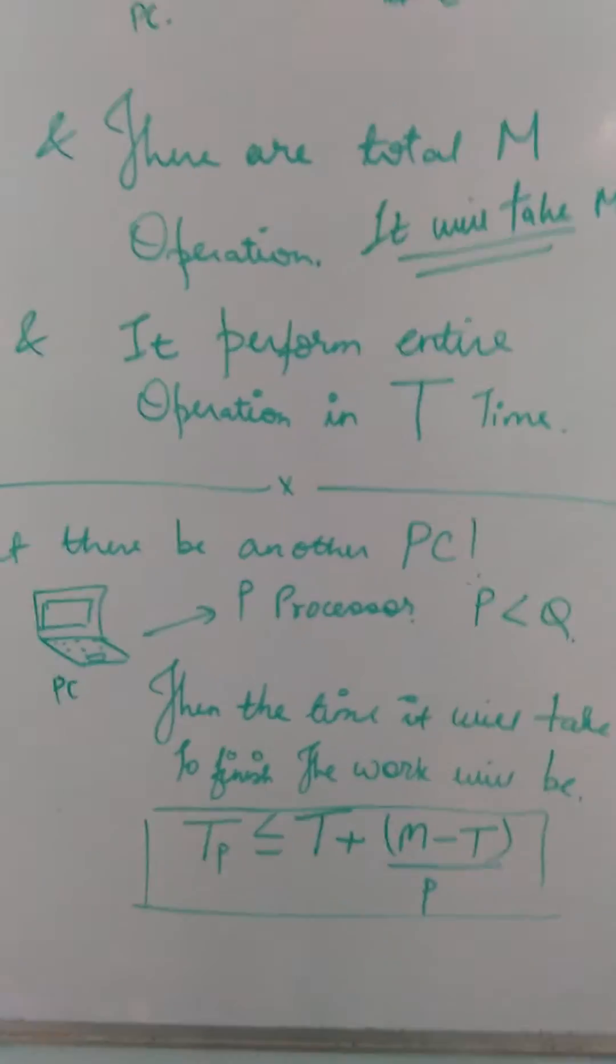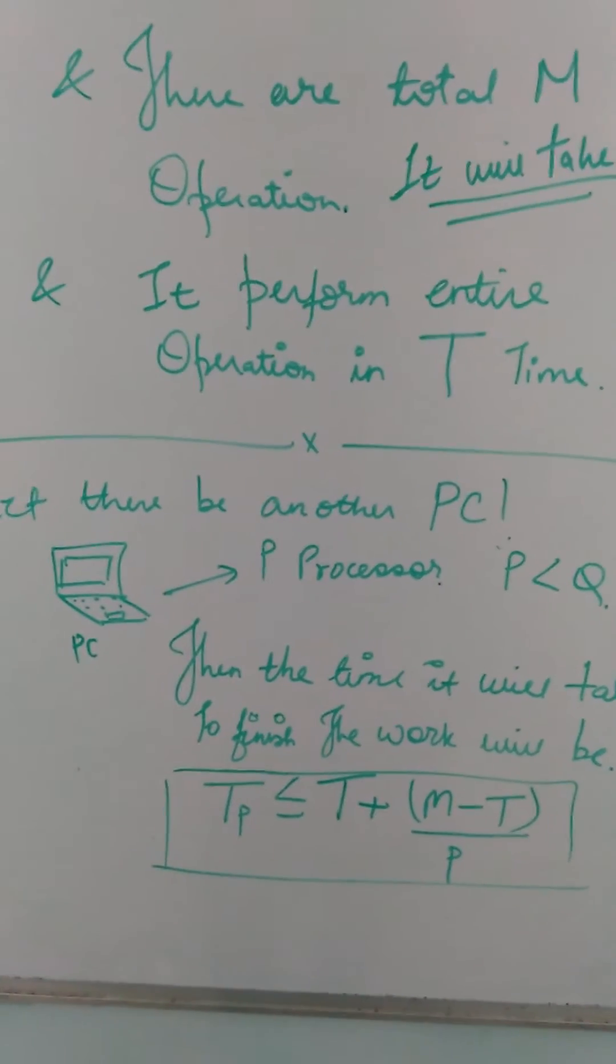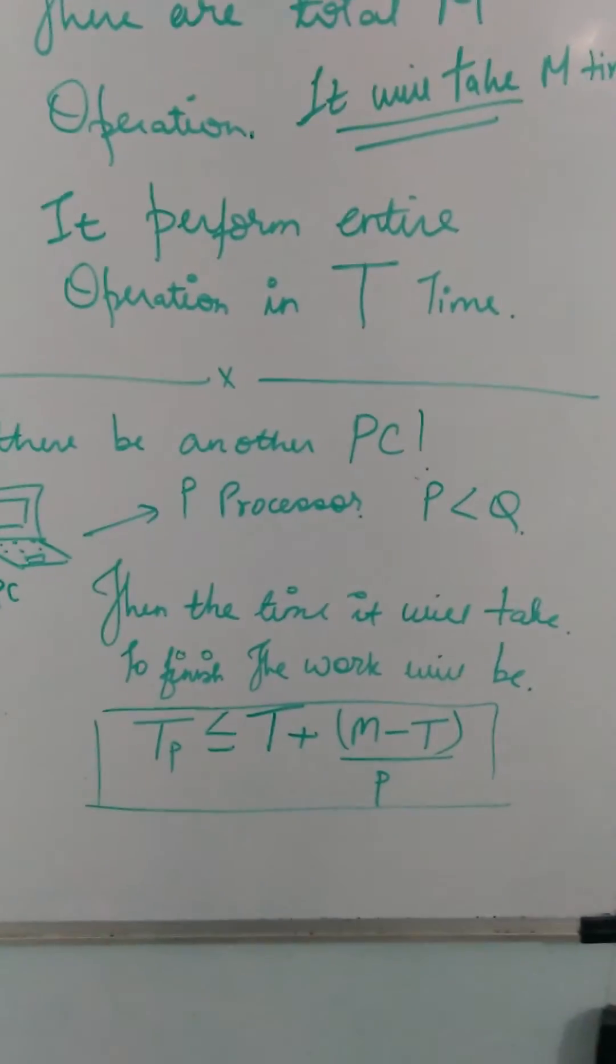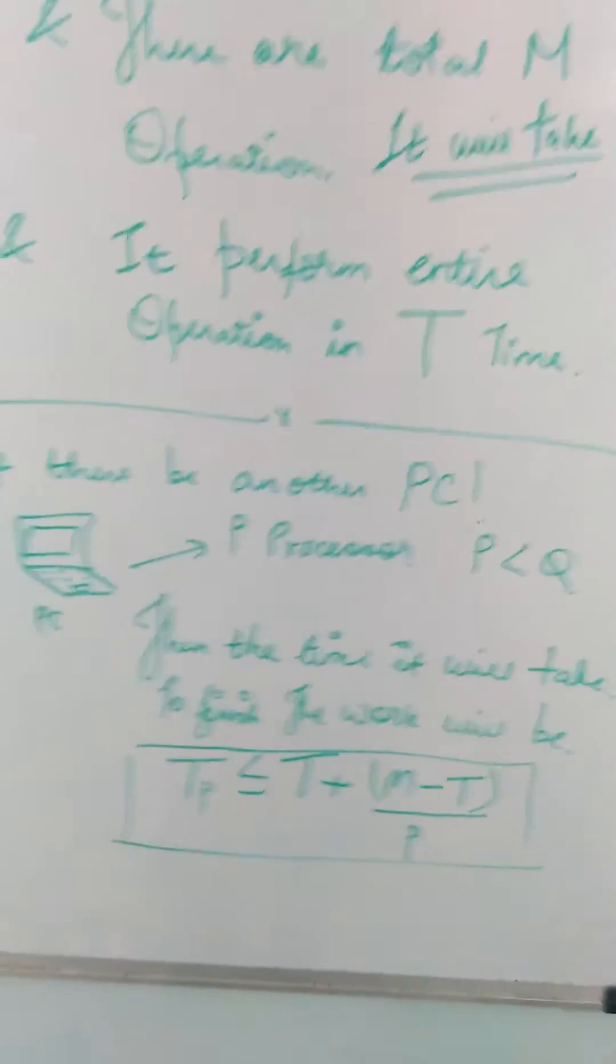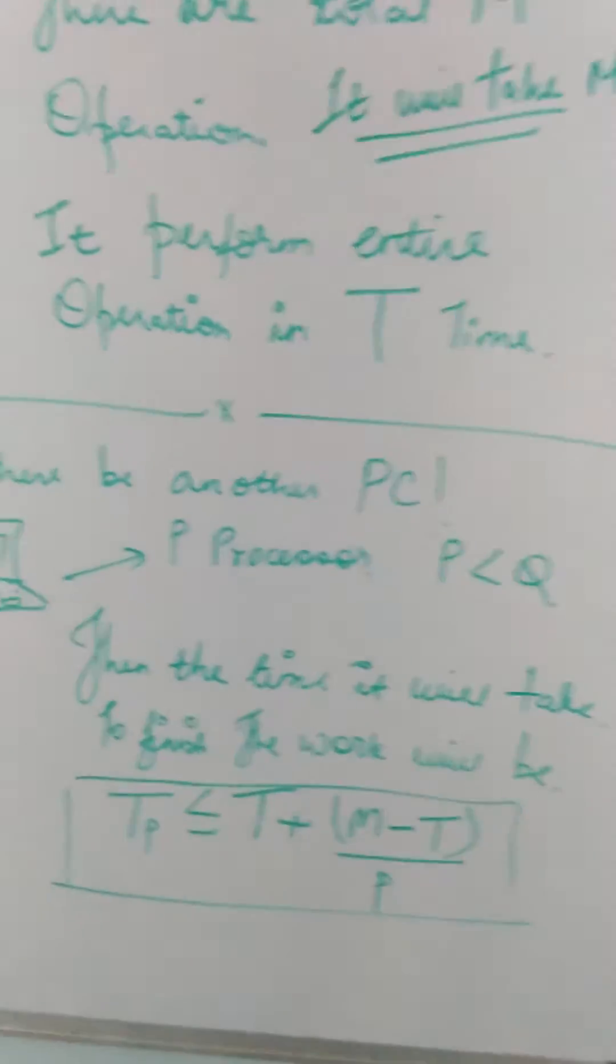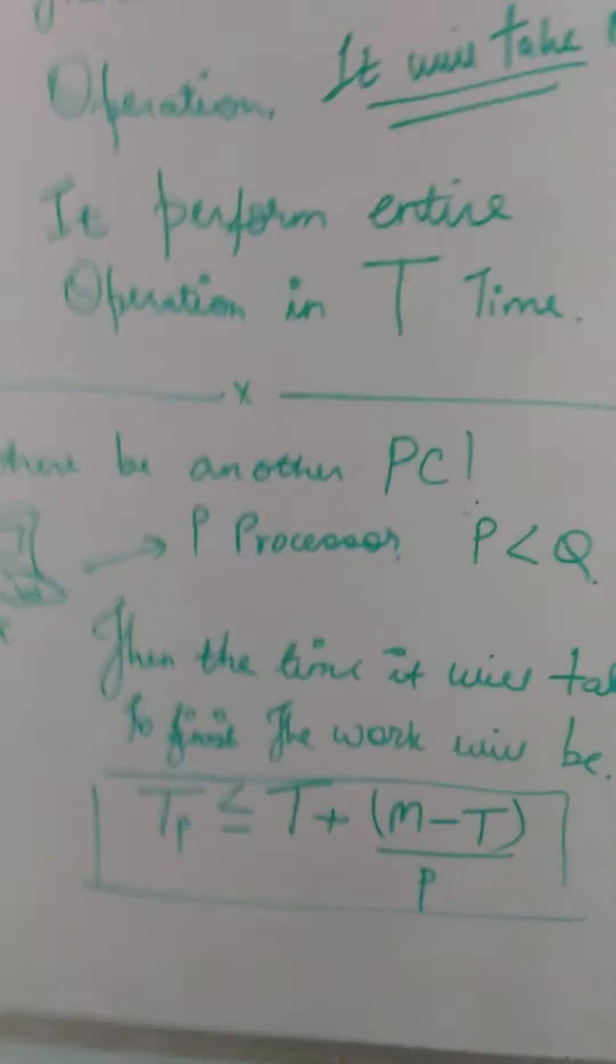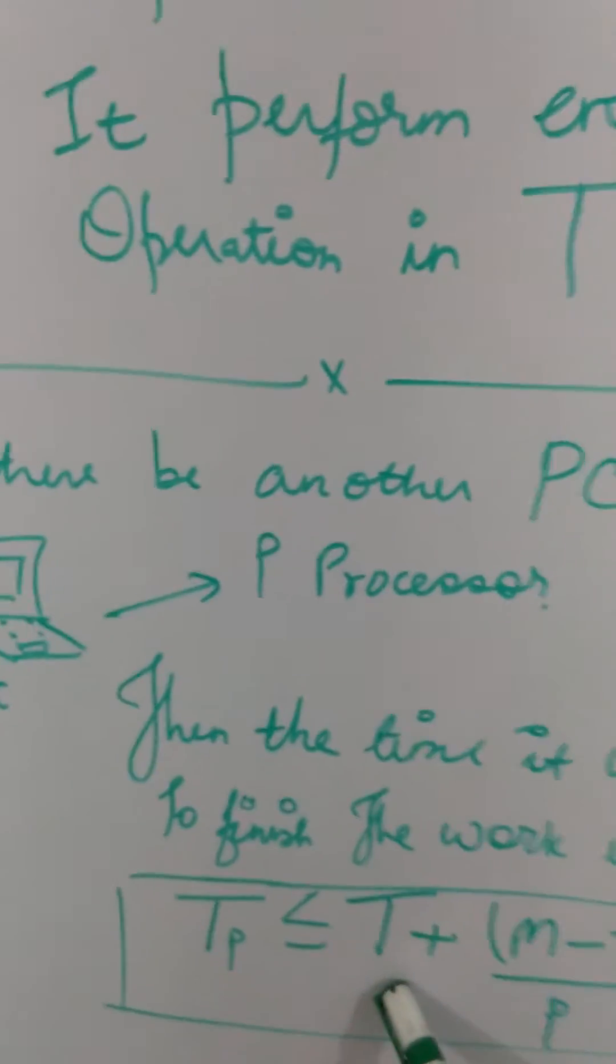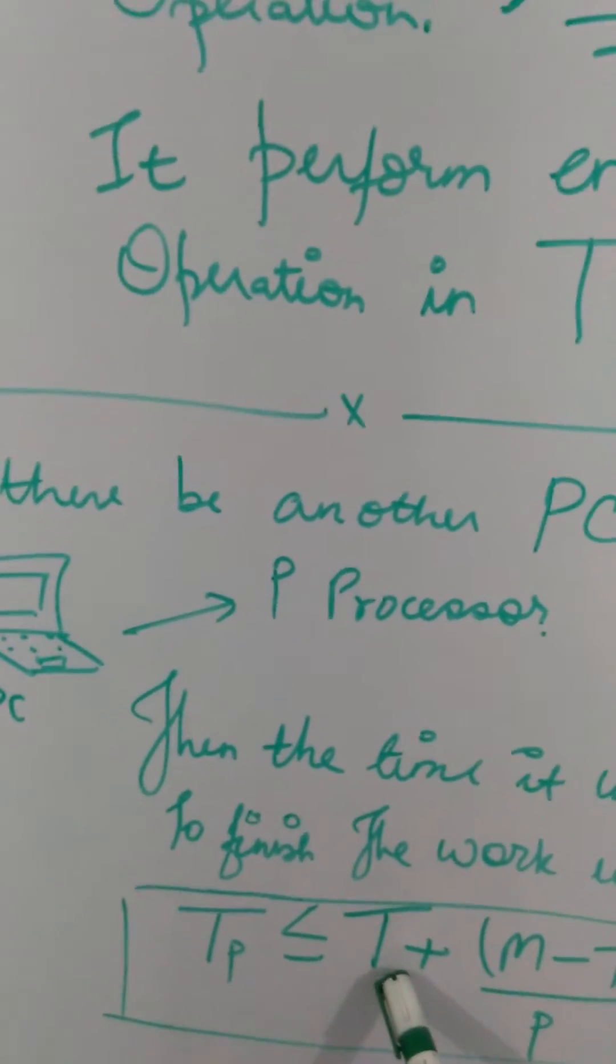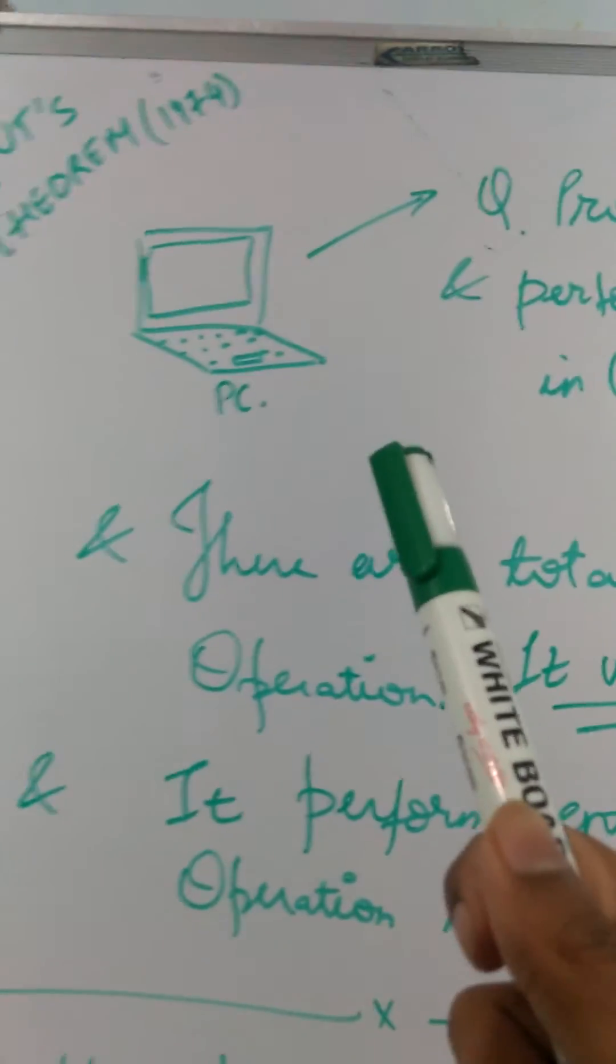In this case, we need to find the time it will take to achieve the concurrency. The theorem says that the time it will take for achieving the concurrency will be T plus something additional. This T is the time the earlier PC was taking for maximum concurrency.